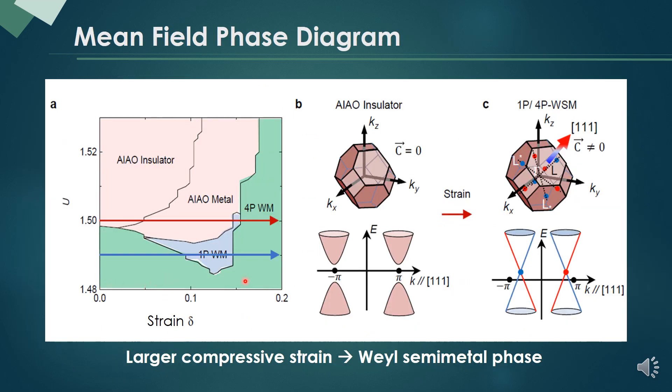Using the Hubbard model, we can draw 2D mean-field phase diagram like this in terms of strain and Hubbard repulsion.